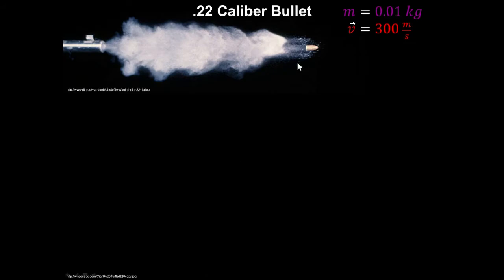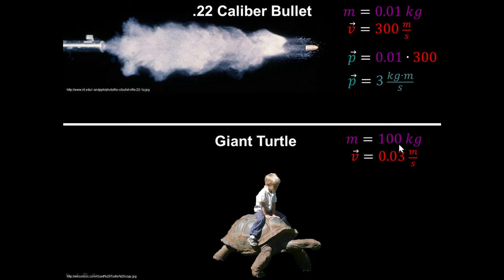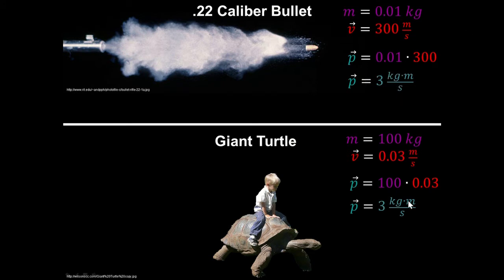If we have a 22-caliber bullet with a mass of 0.01 kilograms and a velocity of 300 meters per second, we calculate momentum as mass times velocity and get 2 kilogram meters per second. A giant turtle with a mass of 100 kilograms moving at 0.03 meters per second also has a momentum of 3 kilogram meters per second. This turtle has essentially the same momentum as that bullet — momentum is the product of mass and velocity, not just one or the other.